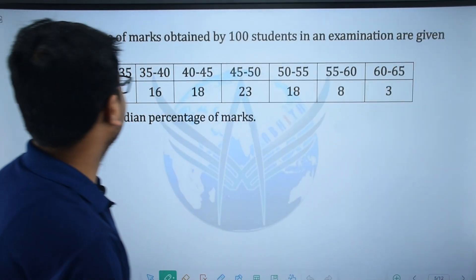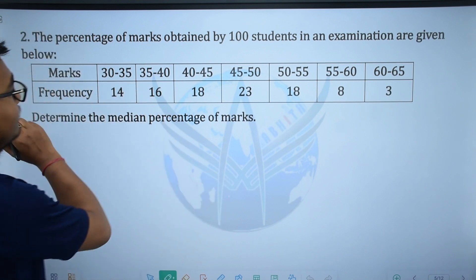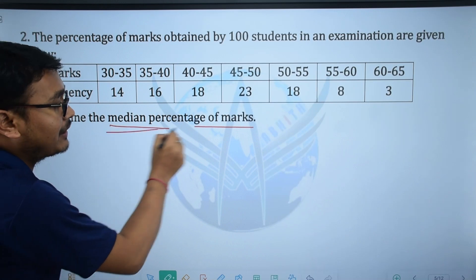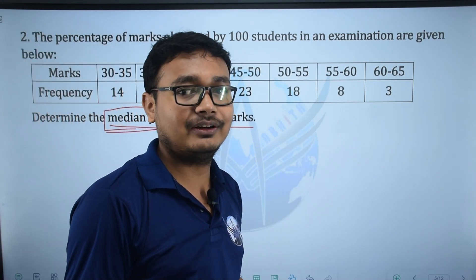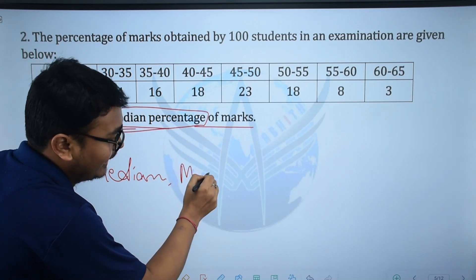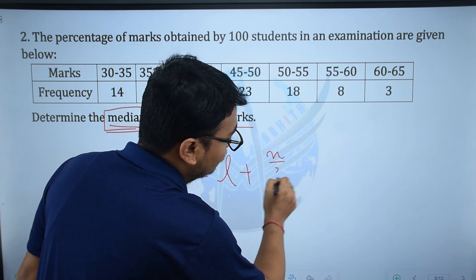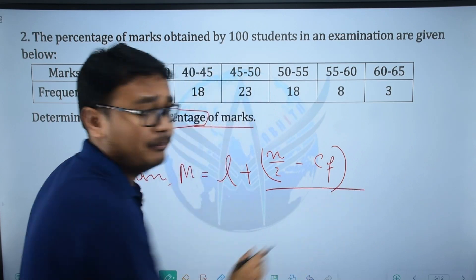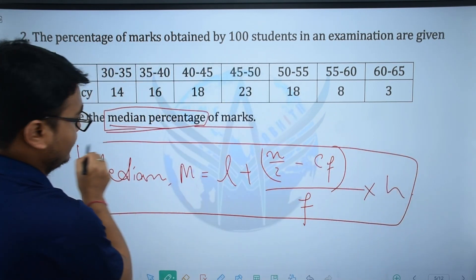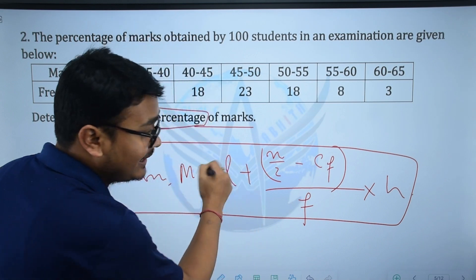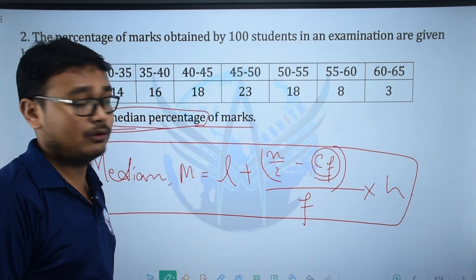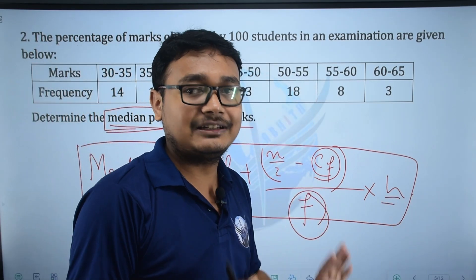Next question: The percentage of marks obtained by 100 students in an examination are given below. Marks and frequency — determine the median percentage of marks. The median formula is: M = L + (N/2 − CF) / F × H. Here, CF is cumulative frequency, H is the class height, F is the frequency of the median class, and L is the lower limit of the median class.